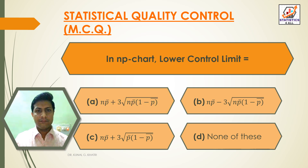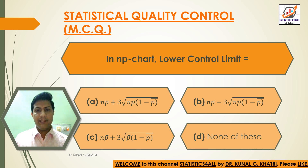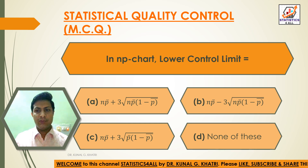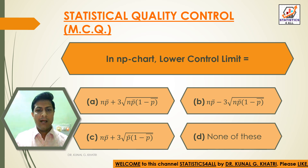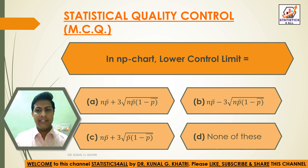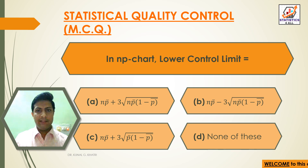Next question: in NP chart, lower control limit is equal to? Option B: NP bar minus 3 into under root NP bar into bracket (1 minus P bar), Option D: none of these. Answer: Option B — NP bar minus 3 into under root NP bar into bracket (1 minus P bar) is the lower control limit in NP chart.